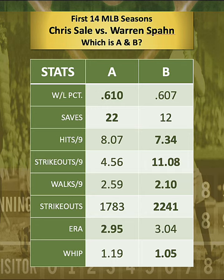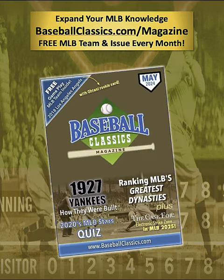5, 4, 3, 2, 1. If you said Warren Spahn for stat column A and Chris Sale for stat column B, congratulations, you nailed it. Join us here next time for our next quiz.